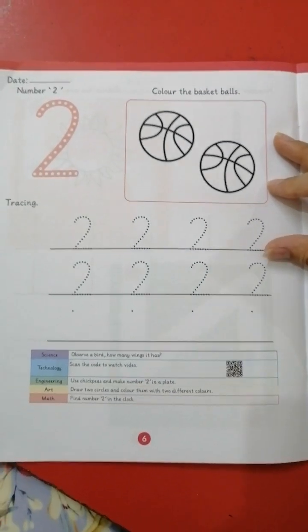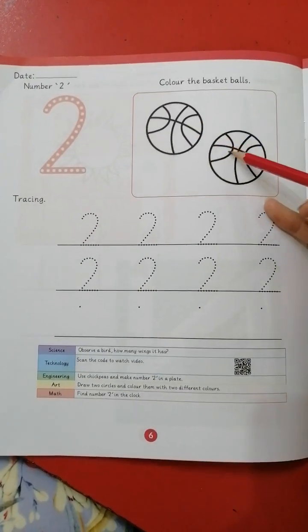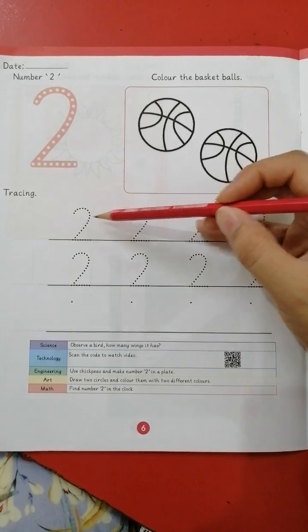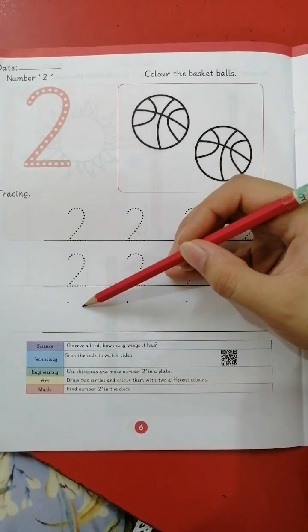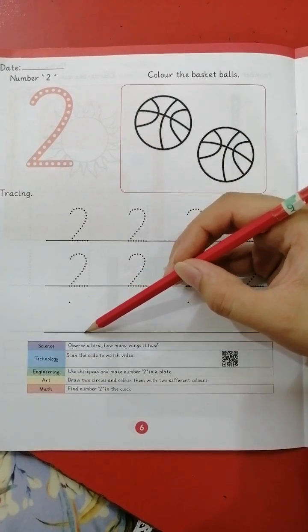Next is number two. How many balls we have? One, two. Very good. You have to trace number two and write it independently. Make a curve, go sideways down, and a sleepy line.